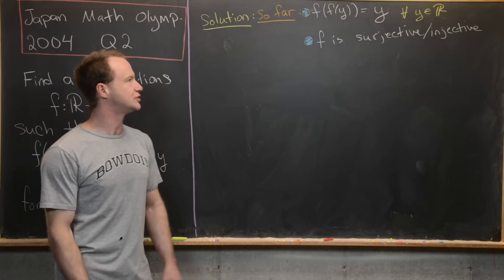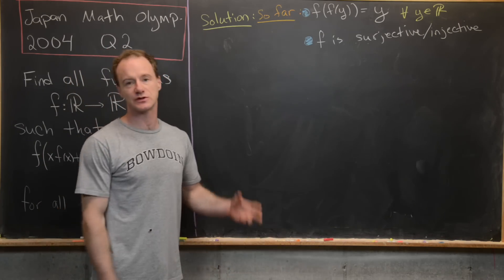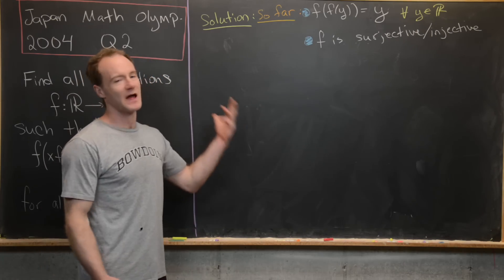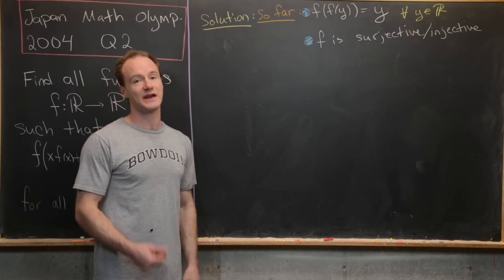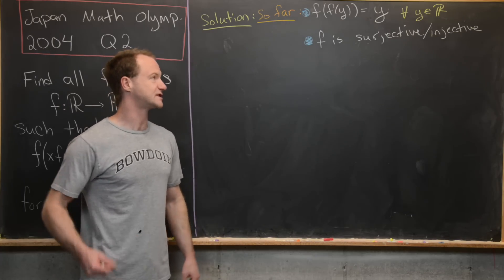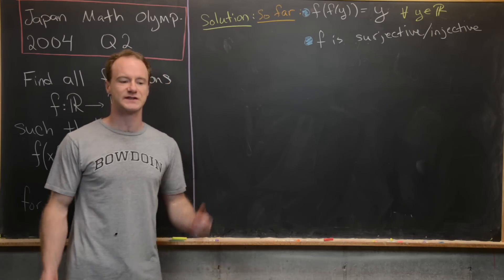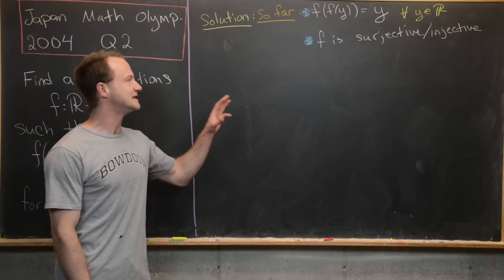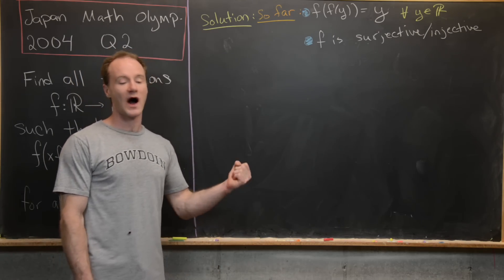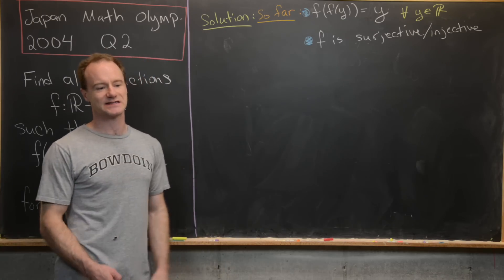To summarize what we've established: f(f(y)) = y for all real y, meaning f is its own inverse — this is called an involution. We also showed f is bijective. Most of that came from setting x = 0 with y free, or a similar setup. Now we want to set y = 0 with x free.